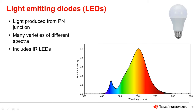White LEDs are actually a combination of several LEDs. The combination of these different spectra from each LED is chosen to produce an overall white light color. An example spectrum of this is shown on the screen. There are also near-infrared LEDs that are not visible to human vision. These LEDs are used in near-infrared applications, such as TV remotes and night vision cameras, as mentioned in the first video of this series.